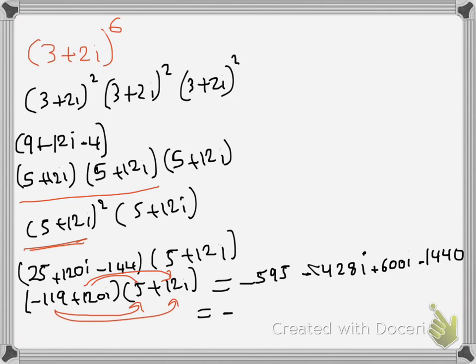And then minus 1428i plus 600i, and that's minus 828i. And that is your answer.